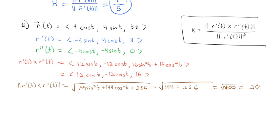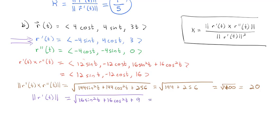So our numerator for the curvature is 20. The denominator is the magnitude of r'(t) cubed. We found r'(t) already: its magnitude is the square root of 16sin²(t) + 16cos²(t) + 9. Pulling the 16 out of the first two terms gives 16 times (sin² + cos²) = 16, plus 9, so we get the square root of 25, which is 5.